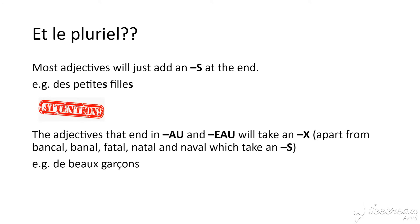What about the plural? Well, most adjectives will just add an S at the end — so des petites filles. But be careful: adjectives that end in -eau and -al will take an X. Apart from bancal, banal, fatal, natal, and naval, which take an S — but to be fair, you're not going to encounter those very often. So for instance, un beau garçon becomes deux beaux garçons.